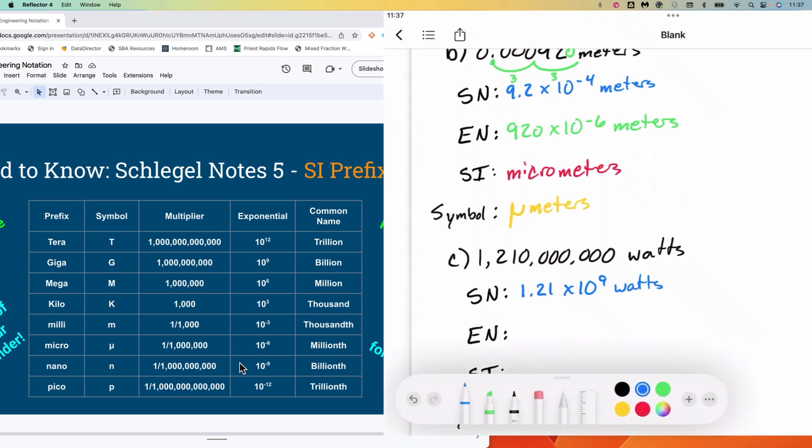In engineering notation, we would have jumps of three again. So three, three. And I still don't have a number less than 1000 in front. So three again. 1.21 times 10 to the 1, 2, 3, 4, 5, 6 times 10 to the ninth. This happens to be the same as it is in scientific notation, because 9 is a multiple of 3.